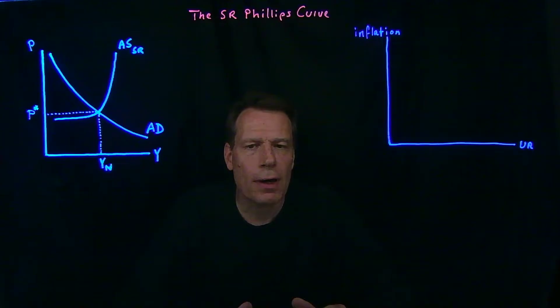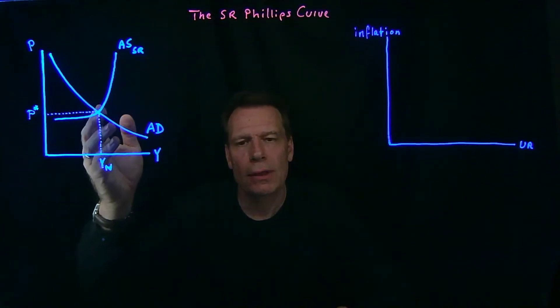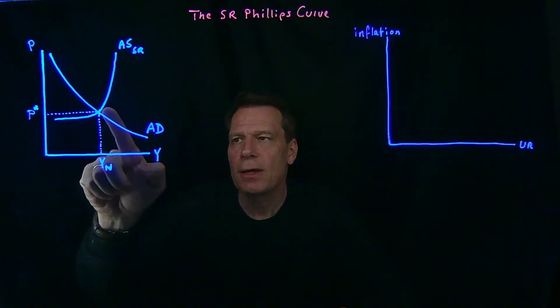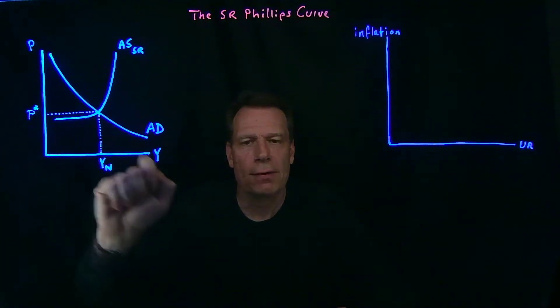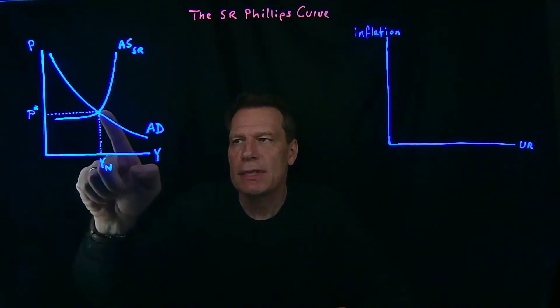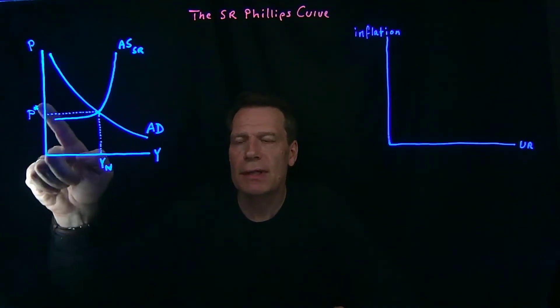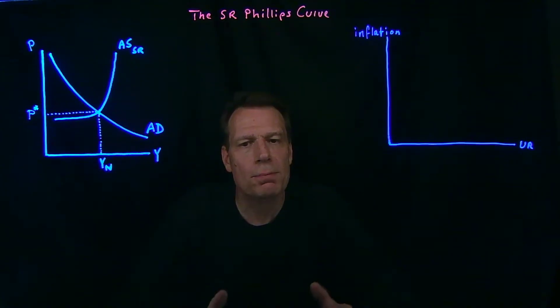Now so far, we've primarily asked what happens if there's a drop in aggregate demand, which causes a downward or leftward shift in the aggregate demand curve. In that case, we move down that short run aggregate supply curve, and we see a drop in output, a recession, but relatively little change in prices because prices are sticky.